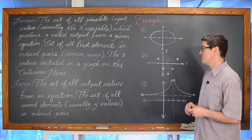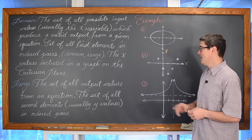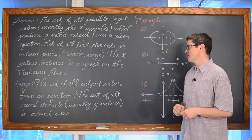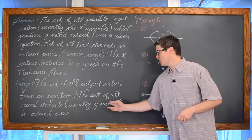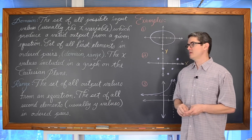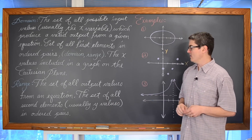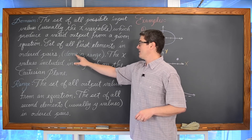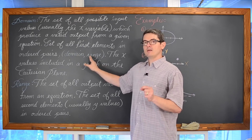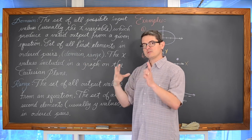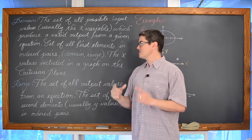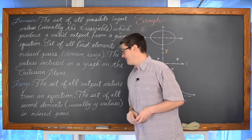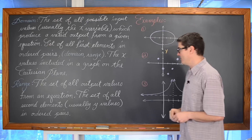The range is the set of all output values from an equation — the set of all second elements, usually the y values in ordered pairs. When talking about a domain and range type organization, an ordered pair is usually an x and a y value.